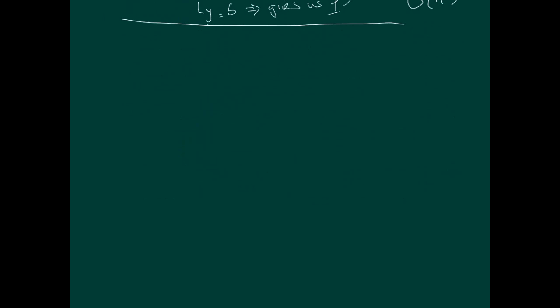Let's look at how we can decompose a matrix A into this product. The first method involves Gaussian elimination. As we go through the Gaussian elimination process, you take — for instance — A11 and elements here, and A21 and elements here. The first operation is to eliminate A21 using A11. The way you do this is: your new equation two is E2 equals E2 minus (A21 over A11) times E1.